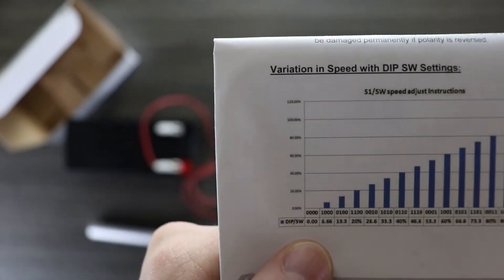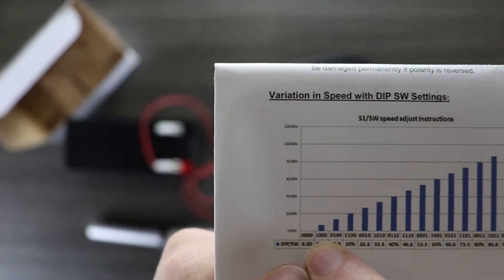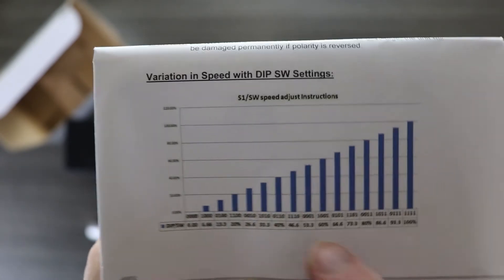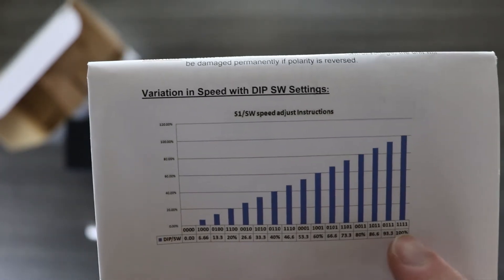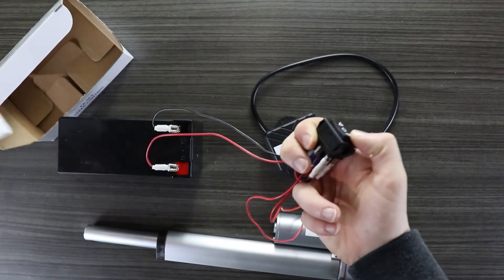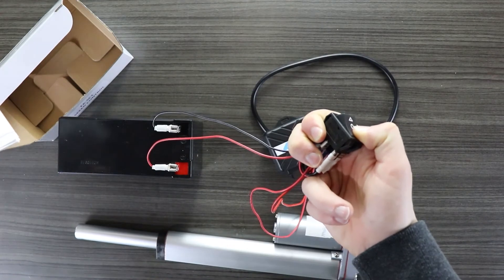If however we set them all to zero, that's going to be the minimum speed and it's not going to move at all. According to this table we can program it to any speed that we want and it will have a linear relationship. So here in the up state we're moving at the maximum speed.